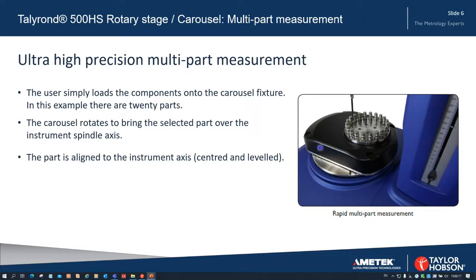First of all, the system aligns that part, centers and levels it, and then it measures it for roundness, surface finish, contour, and all the measurements that we require. It's also possible to fix a calibration ball as one of these items in order to calibrate the gauge and stylus as part of that process.